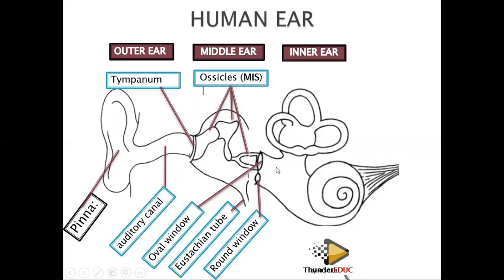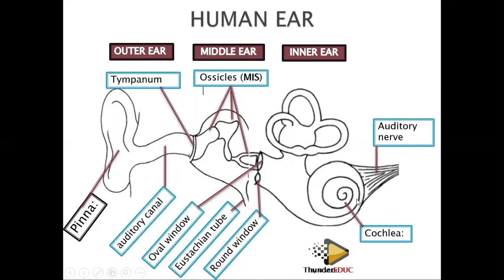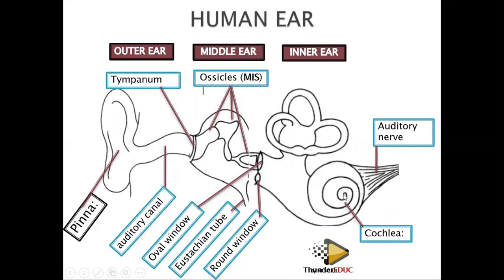The inner ear is divided into different parts: the cochlea and the auditory nerve. The cochlea is where you find cells detecting sound or vibration. The auditory nerve sends impulses to the brain. There is also another part of the ear responsible for balance — the semi-circular canals.